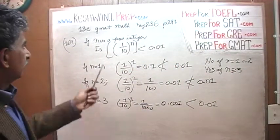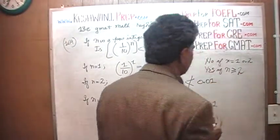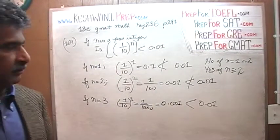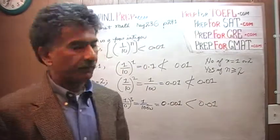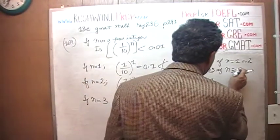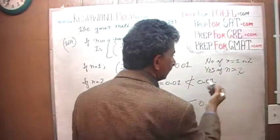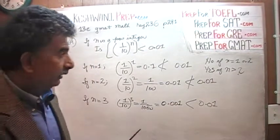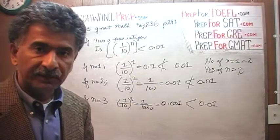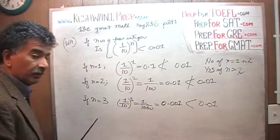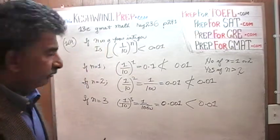Greater than or equal to 3 because n is a positive integer — so we can also say greater than 2, because greater than 2 starts at 3 for integers. That is what we have to establish: is n greater than 2? Now that we understand what is being asked, we are ready to look at the two statements.